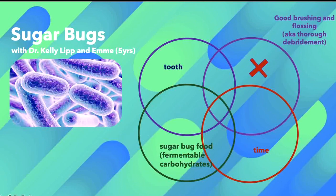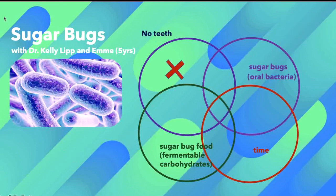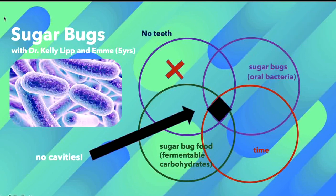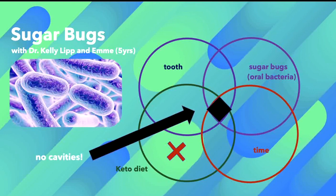If you have really good oral hygiene habits, and you're doing a great job at brushing and flossing every day, you're less likely to get cavities because you're constantly removing the sugar bugs from your teeth. And if you don't have any teeth, you won't get a cavity — this is why newborn babies can't get cavities on their teeth until they come in. If you're not eating a lot of sugar bug foods, then you also won't get a cavity. A good example of this is people who are eating a ketogenic diet, or a keto diet. These diets are really low in fermentable carbohydrates, so it significantly reduces your risk of cavities.